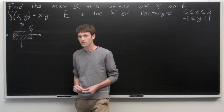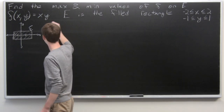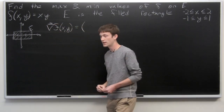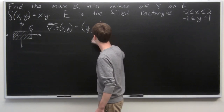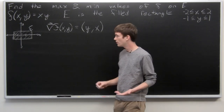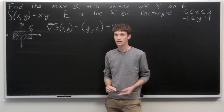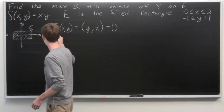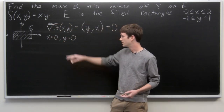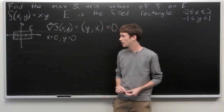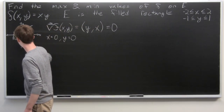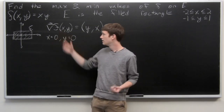First, we'll take the gradient vector of f(x,y). The partial derivative with respect to x is y, and the partial derivative with respect to y is x. Setting the gradient equal to zero, we need y equals 0 and x equals 0. So (0,0) is our only critical point for f(x,y). At the origin, f(0,0) equals 0.